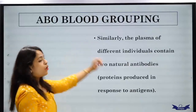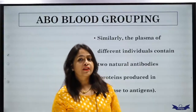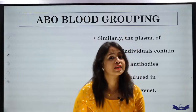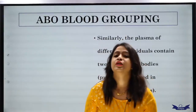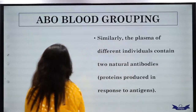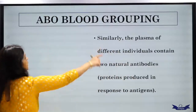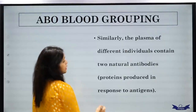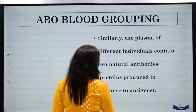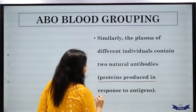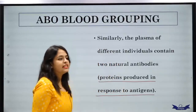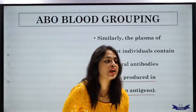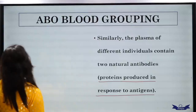Antibodies are of two types: anti-A and anti-B, and antibodies are present in the plasma. The plasma of different individuals contains two natural antibodies. Antibodies are the proteins produced in response to antigens.